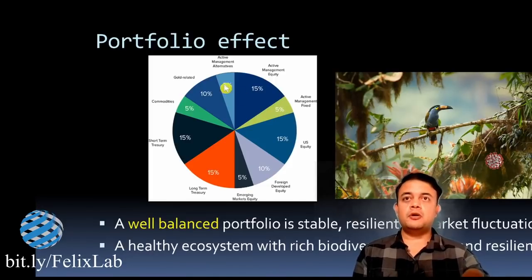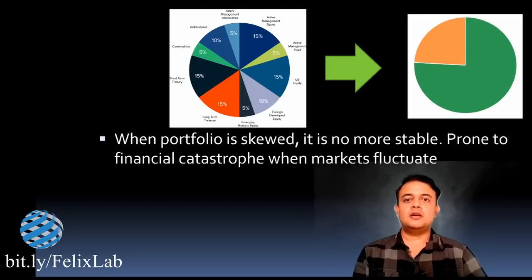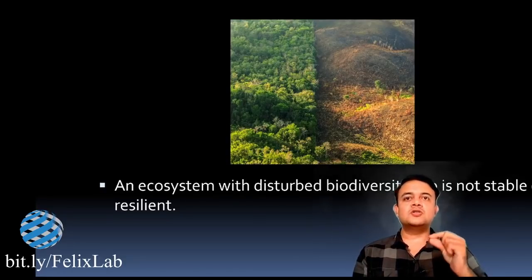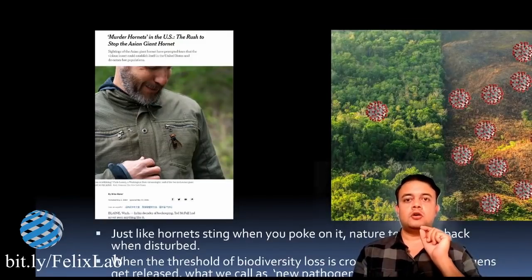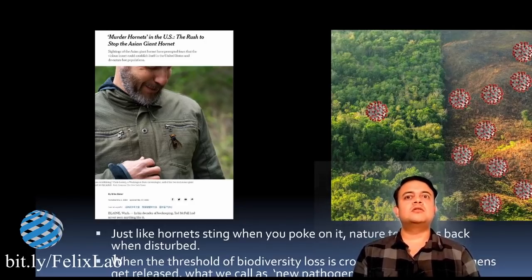Going back to the portfolio analogy — if the portfolio is skewed, it becomes far more prone to financial catastrophe when markets fluctuate. With COVID-19, markets are crashing everywhere — Sensex, Nifty, Dow Jones, Nikkei — and if your assets are not properly balanced you will go through terrible phases. Just like that, a disturbed ecosystem with biodiversity loss is not stable or resilient. The consequence is just like poking a hornet's nest or a snake — nature fights back in defense when disturbed. When the threshold of biodiversity loss is crossed, reserved pathogens get released as new emerging pathogens.